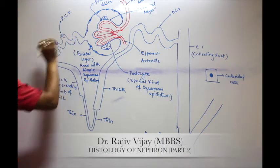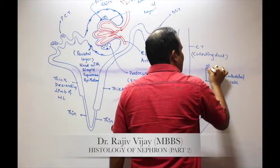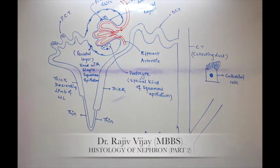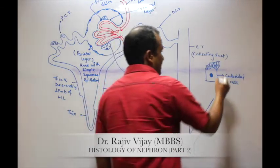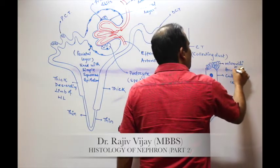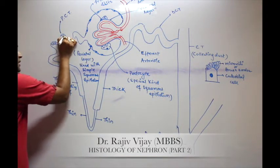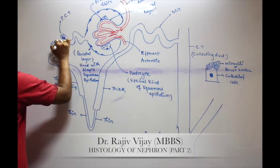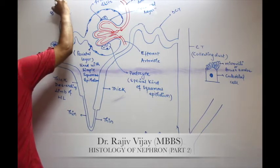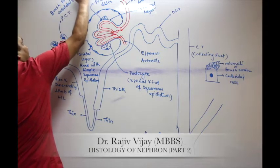The cuboidal cells of the PCT have a speciality — these cuboidal cells have invaginations or evaginations of the plasma membrane. These evaginations are known as microvilli, and microvilli is also known as brush border epithelium. So the cuboidal epithelium with brush border is found in the PCT: brush border cuboidal epithelium.